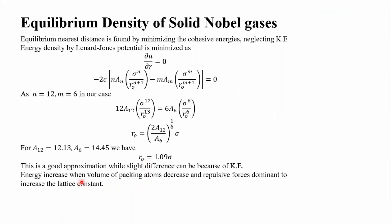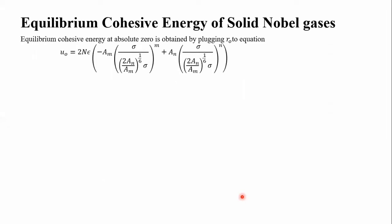One thing I must clarify: when energy increases, that corresponds to a decrease in the lattice constant because repulsive forces are dominant. When repulsive forces are dominant, the distance between atoms in the whole lattice increases, so ultimately energy increases. The packing fraction decreases, volume decreases — so repulsive forces being dominant means the lattice constant increases.